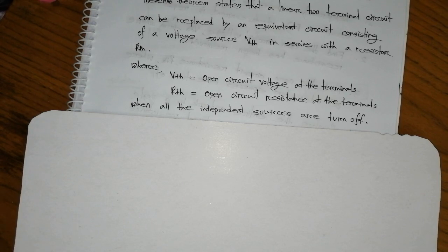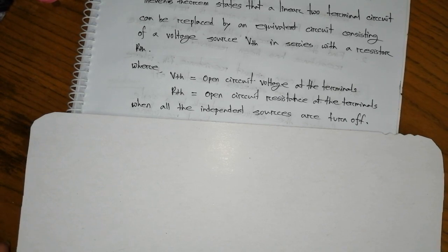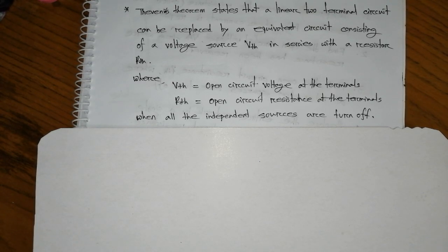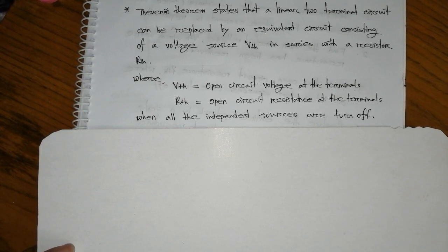If you have independent sources, they will be inactive. As we have seen in the superposition lecture, we replace the circuit in the solution. For a current source, we open the current source — the current source will be open.